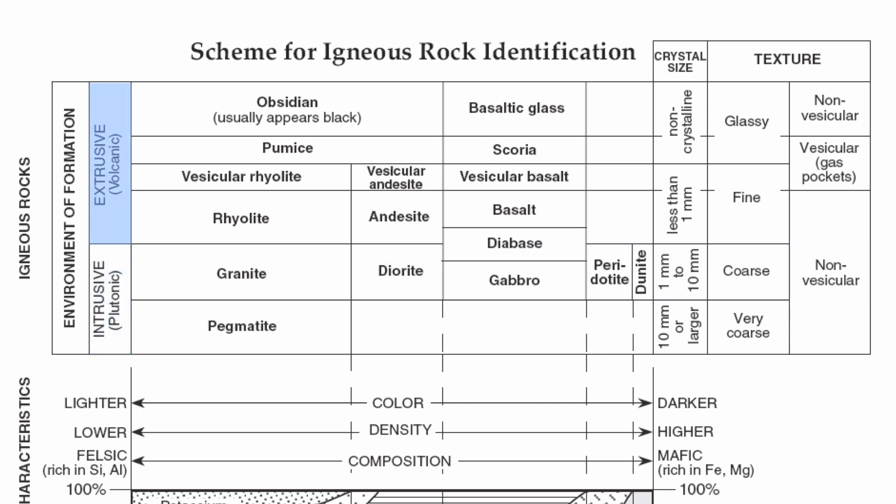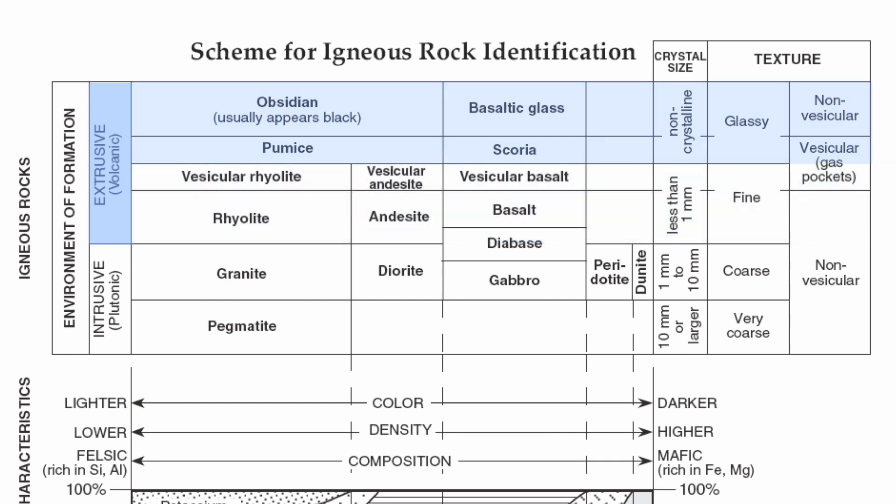Above that, you have your extrusive rocks. That's going to incorporate your fine rocks of rhyolite, andesite, diabase, and basalt. You'll notice diabase actually has both characteristics. Remember, extrusive rocks are your volcanic rocks — they're going to form very quickly through the solidification of lava, so your crystals are going to be really tiny, and sometimes you don't have any at all. You also can get some fine rocks that are vesicular: vesicular rhyolite, vesicular andesite, and vesicular basalt — fine with gas pockets. Above that are your glassy rocks, instant cooling of lava. Pumice and scoria are glassy with gas pockets. Obsidian and basaltic glass are glassy without gas pockets.